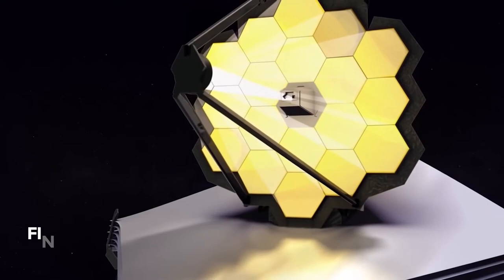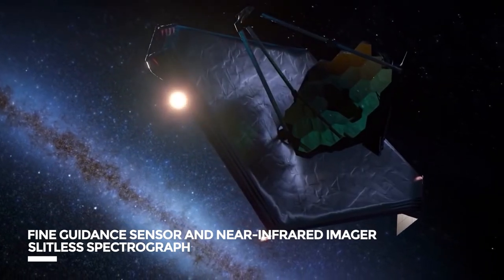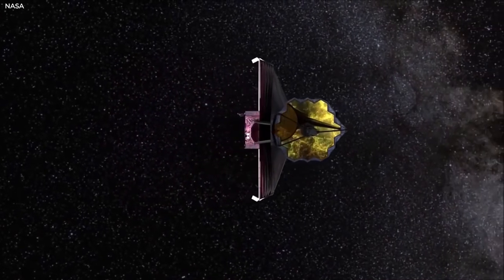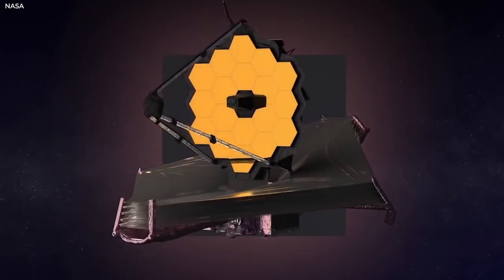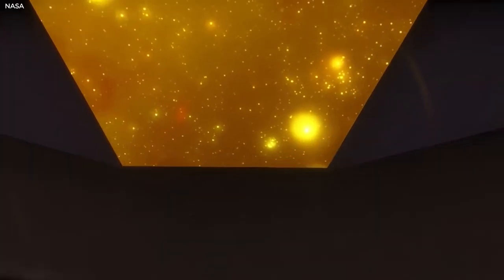Fine Guidance Sensor and Near-Infrared Imager and Slitless Spectrograph, or FGS NEARIS, is utilized to keep the observatory's line of sight stable during science observations. FGS measurements are utilized to manage the spacecraft's overall orientation as well as drive the fine steering mirror for image stabilization.